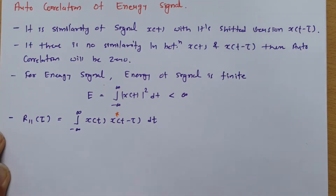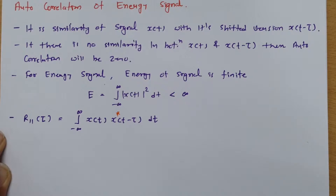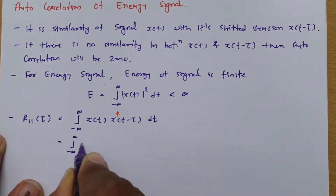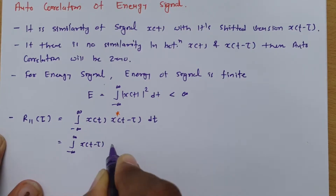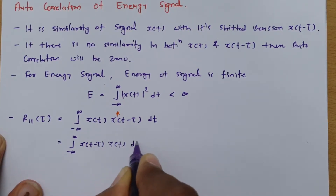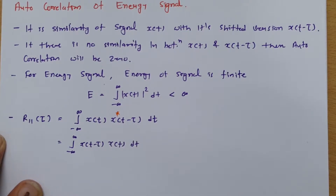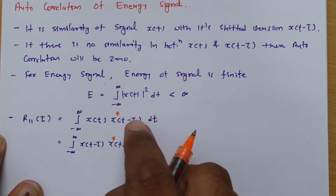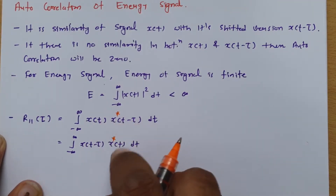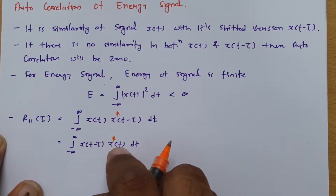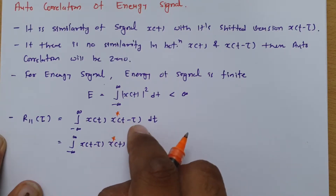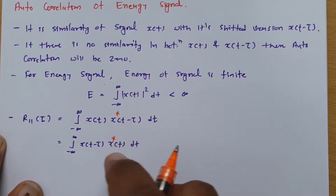You can also calculate the same thing as the integral of x(t minus τ) multiplied by x(t) dt, where one can consider x(t) as the conjugate. So as I mentioned, any one of the two signals should be considered as the conjugate. Here I considered x(t) as the conjugate, and alternatively x(t minus τ) as the conjugate, then perform the same integration.